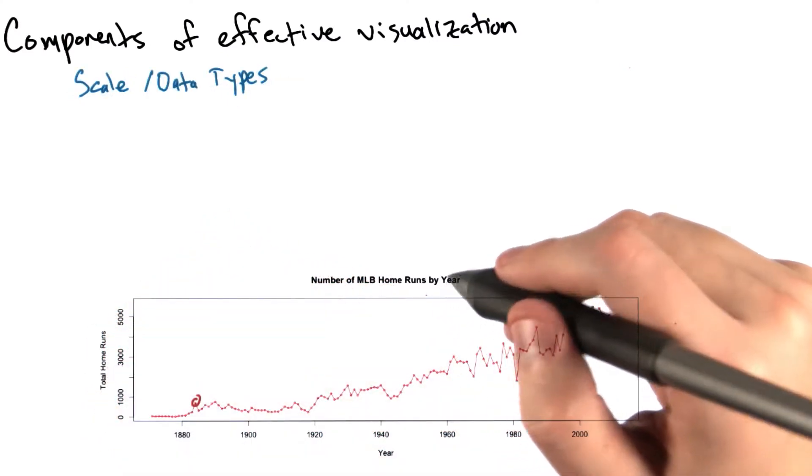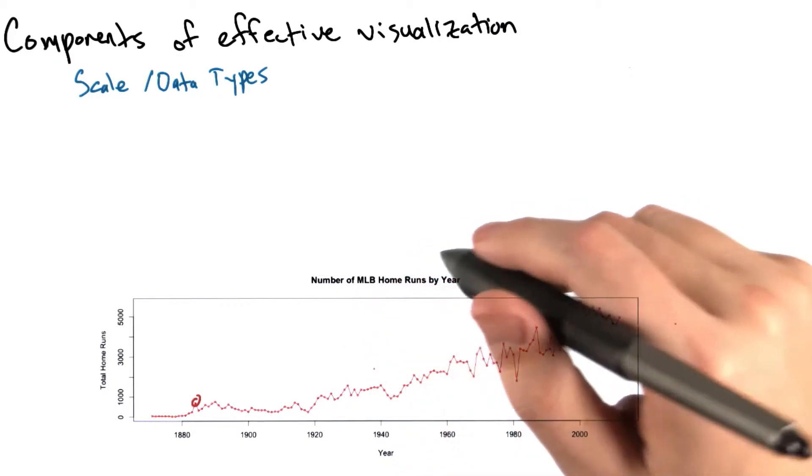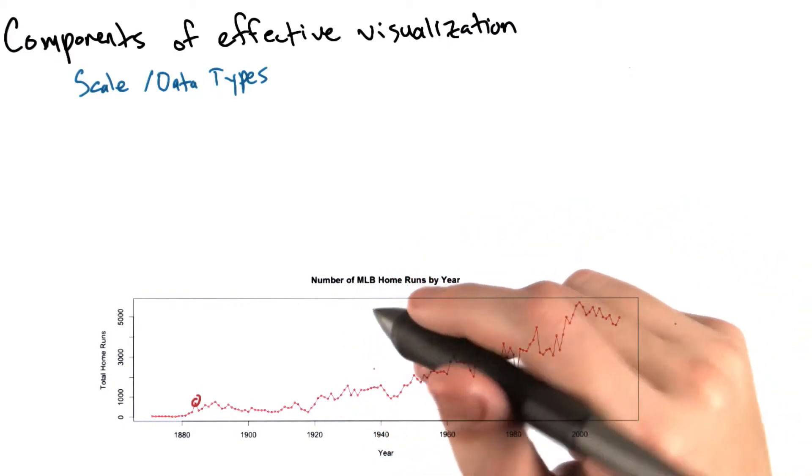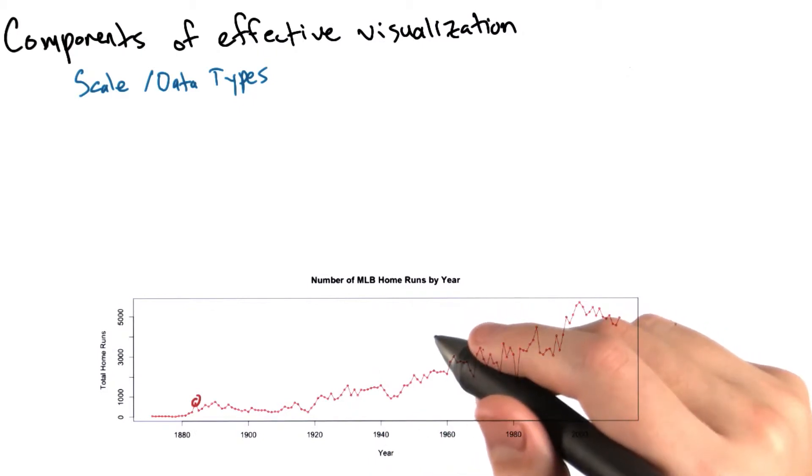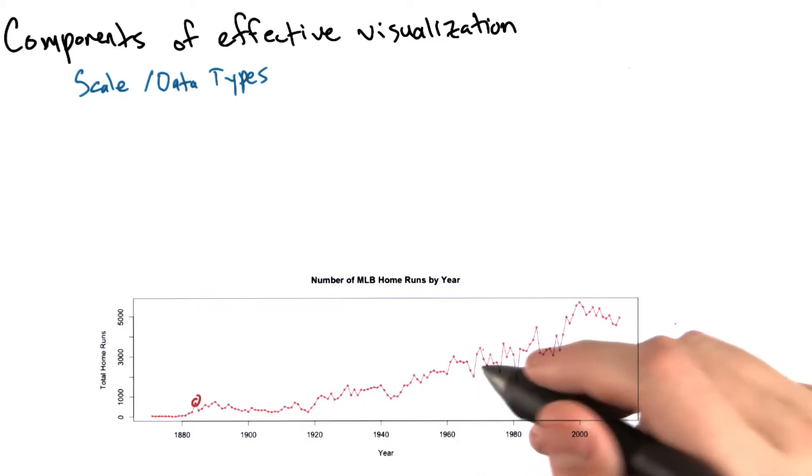Whereas the coordinate system tells us what various dimensions of our visualization may correspond to, the scale or data type will tell you where exactly your data needs to go. There are three types of scales that we could use: numeric, categorical, and time series.